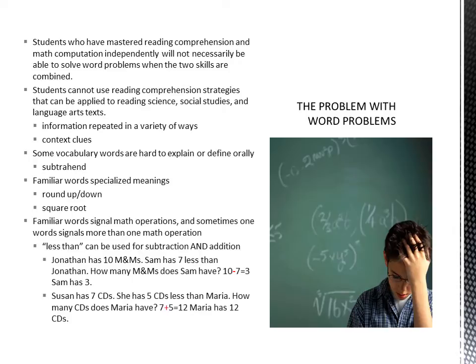Some words are hard to define orally, like the word 'subtracted.' Other words may be familiar but have specialized meanings, like 'round up,' 'round down,' or 'square root.' Some everyday words signal more than one math operation, so it is not as simple as telling students to just memorize that this word equals that operation. For example, 'less than' can be used for both subtraction and addition. It's important to acknowledge that, to be equitable, ELLs must be exposed to the same scope and sequence as native speakers — as mandated in the Florida Consent Decree and Lau v. Nichols. Don't excuse your ELLs from difficult material; teach them the academic English and the math skill, and they will do it.